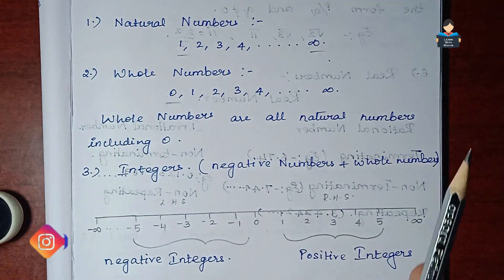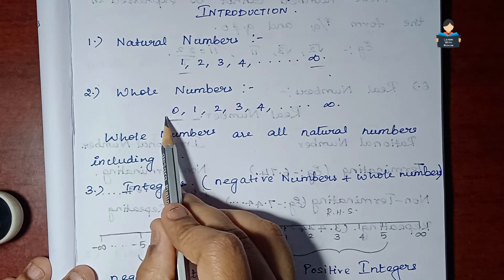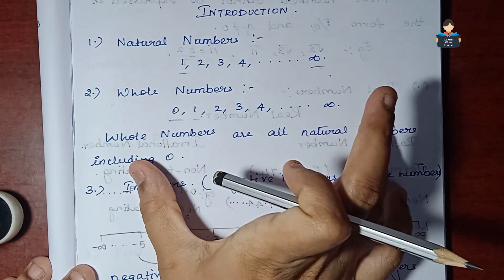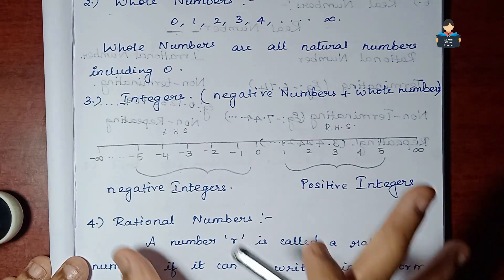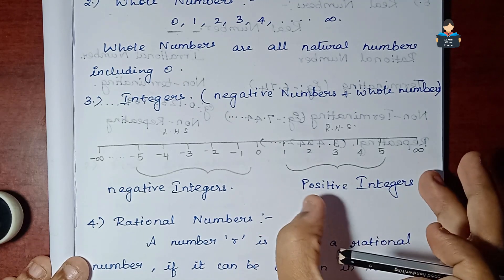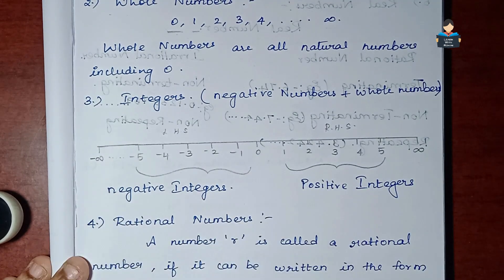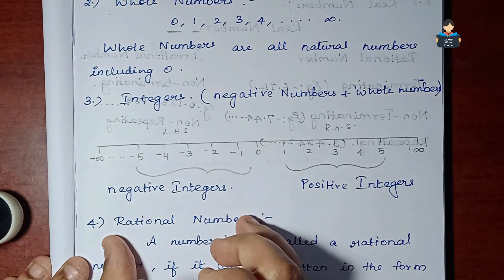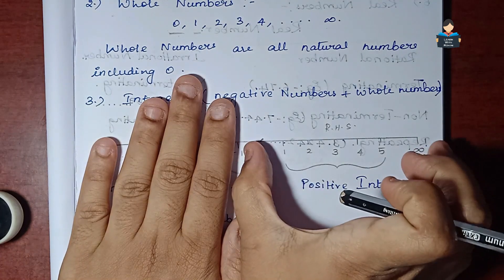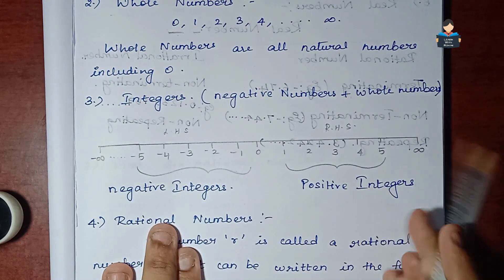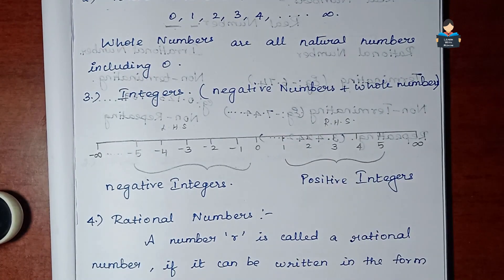To summarize: natural numbers start from 1 to infinity. Whole numbers include all natural numbers plus zero, so from 0 to infinity. For integers, on the number line from 0 to infinity are positive integers, and from 0 to minus infinity are negative integers. So integers include negative numbers plus whole numbers.